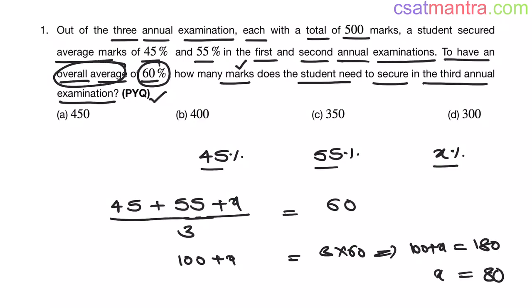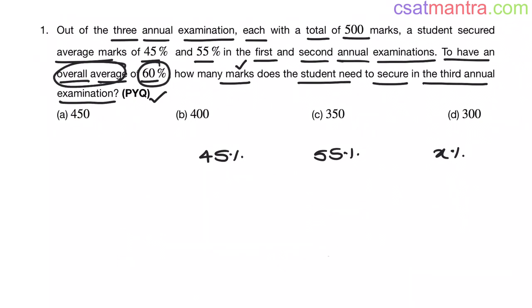Let me review the average concept, my friends. Average is total sum divided by number of quantities. There are three quantities, three percentages. Now we know the percentage secured in the third annual examination is 80%.